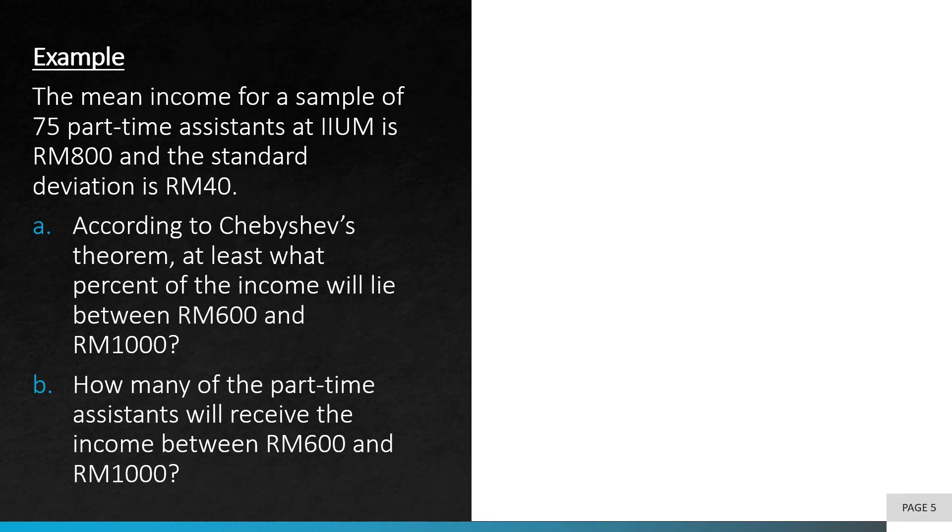Let's try an example. The mean income for a sample of 75 part-time assistants at IIUM is RM800 and the standard deviation is RM40. According to Chebyshev's theorem, at least what percent of the income will lie between RM600 and RM1000? And how many of the part-time assistants will receive the income between RM600 and RM1000?